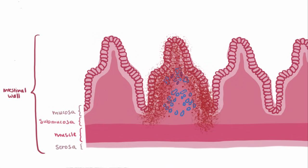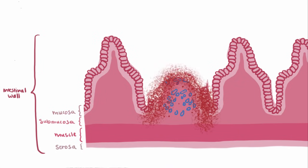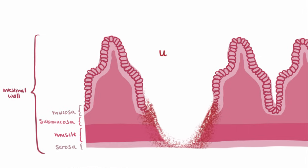Eventually, from inflammatory and cellular damage, ulcers form, which are almost like craters in the intestinal wall. Unlike what we see in other inflammatory bowel diseases like ulcerative colitis, which extends through the mucosa and submucosa...